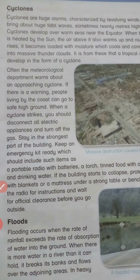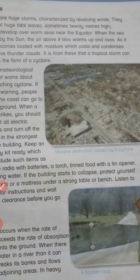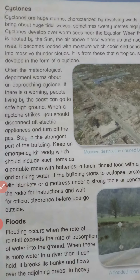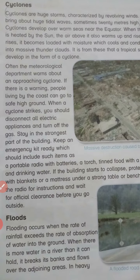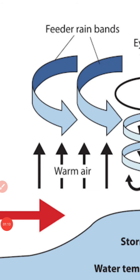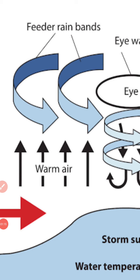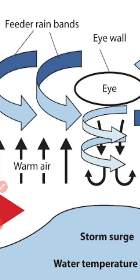Cyclone oceans میں بھی آ سکتا ہے اور tropical areas میں بھی۔ اب ہم پڑھیں گے کہ cyclone کس طرح سے آتا ہے۔